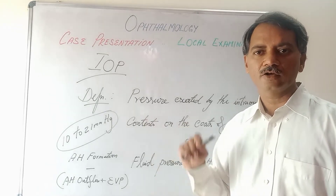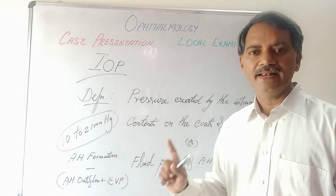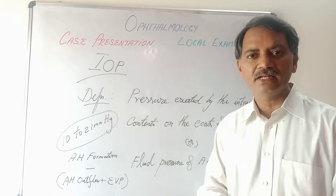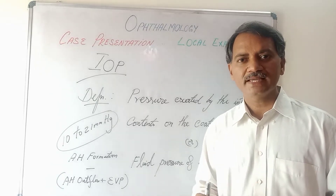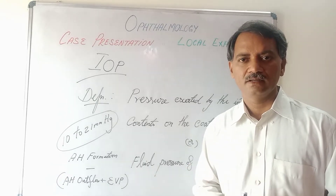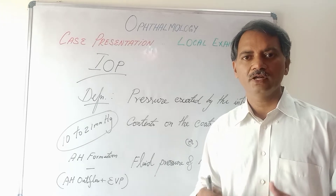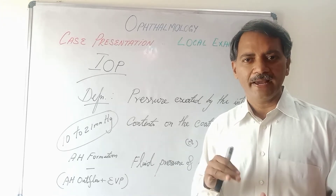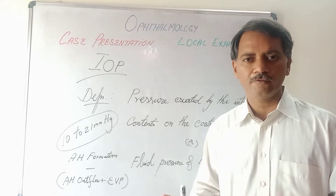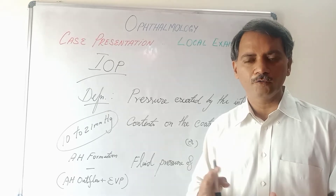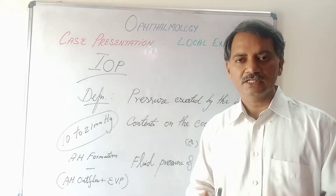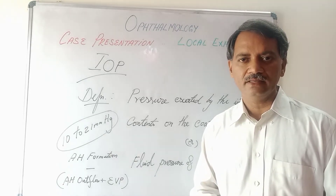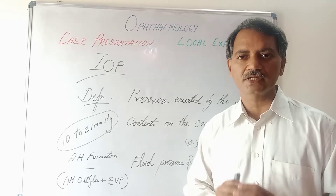The normal intraocular pressure is 10 to 21 millimeters of mercury. What decides the intraocular pressure? It is aqueous humor formation minus the sum of aqueous humor outflow plus episcleral venous pressure. That is what decides the pressure inside the eye, called intraocular pressure.